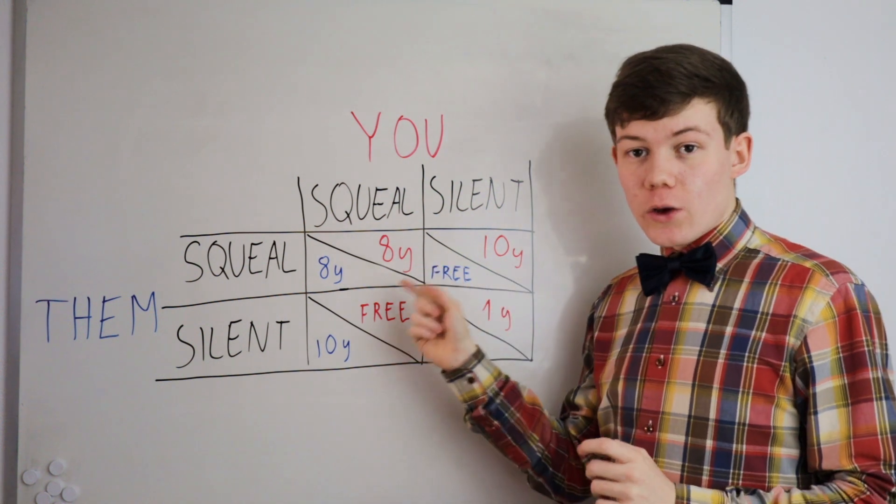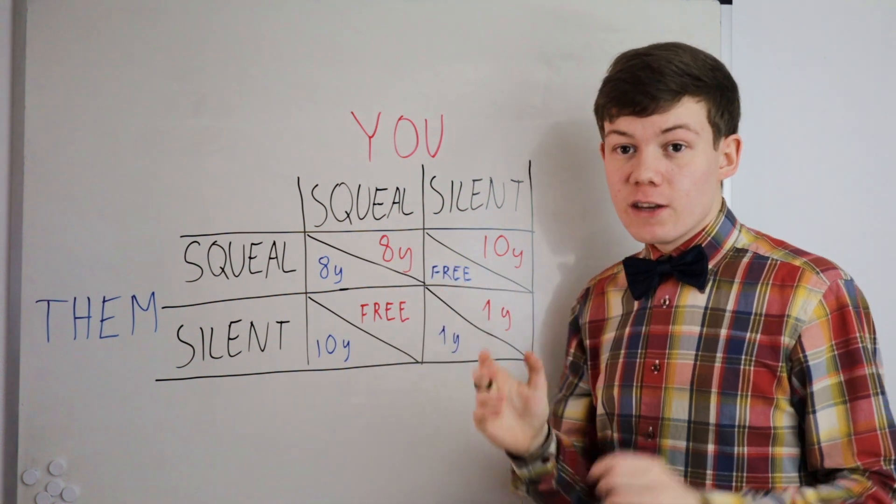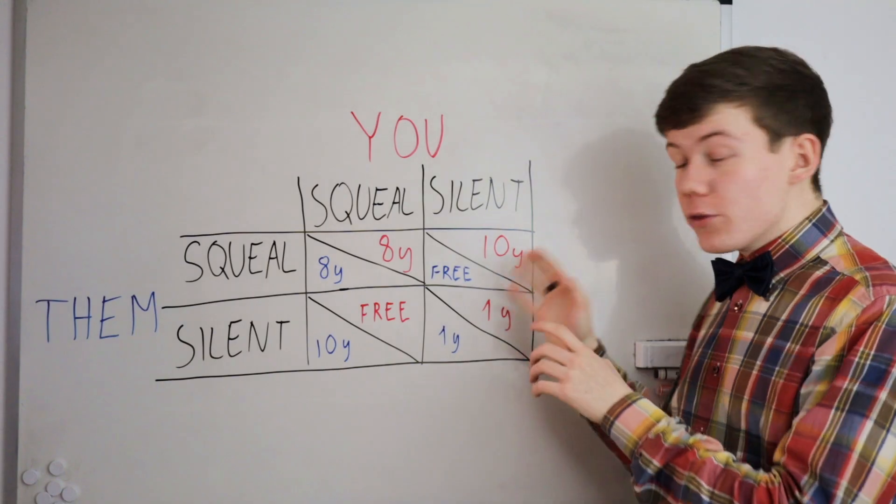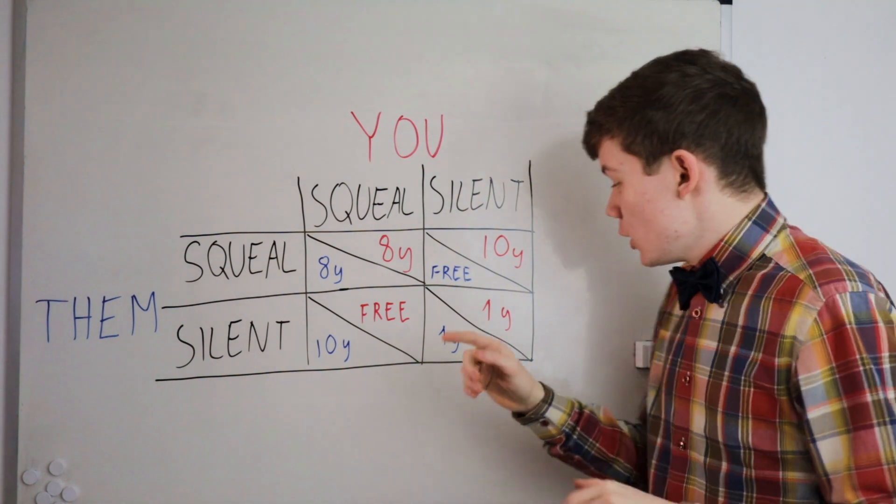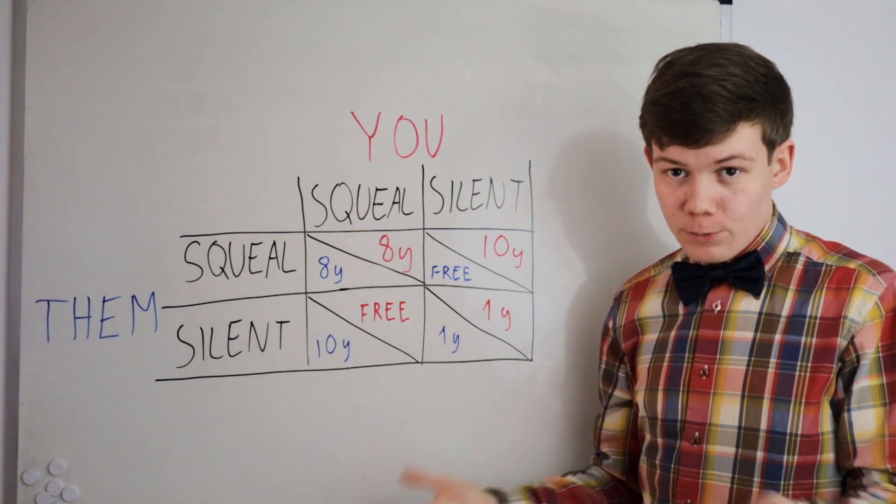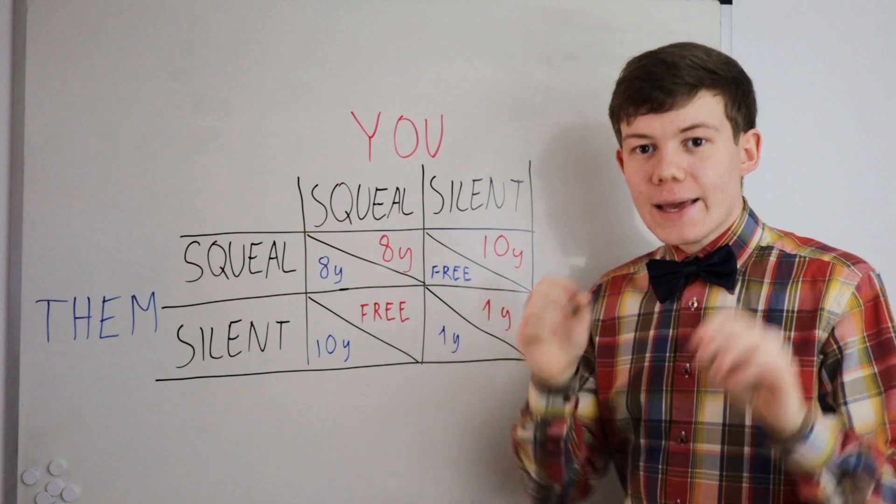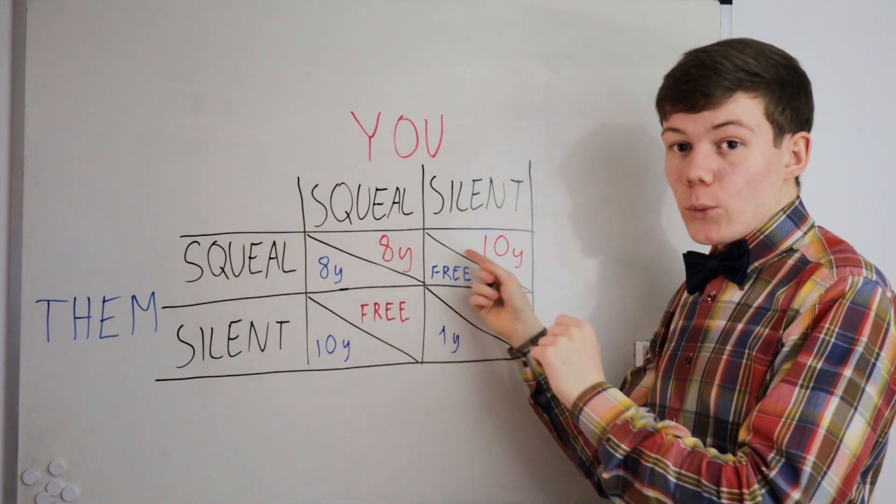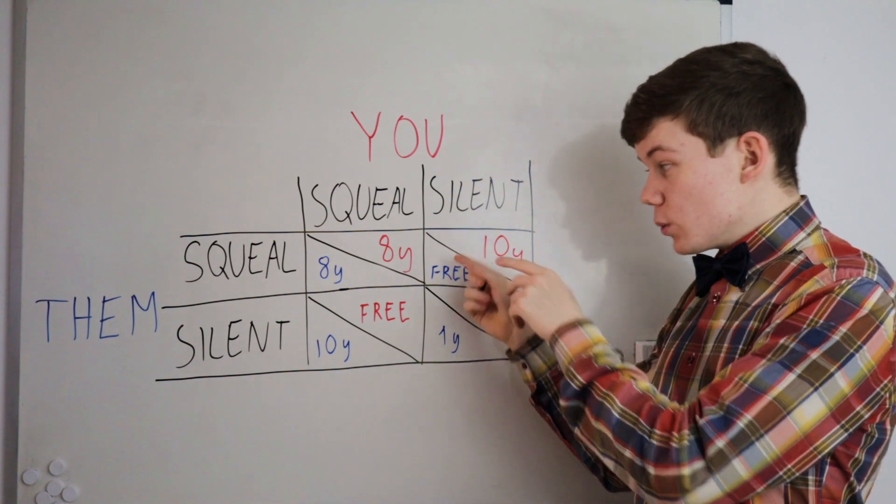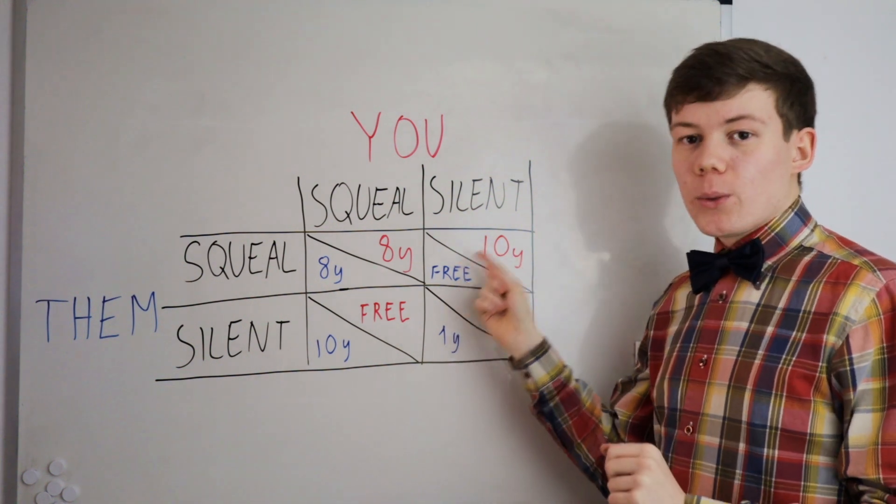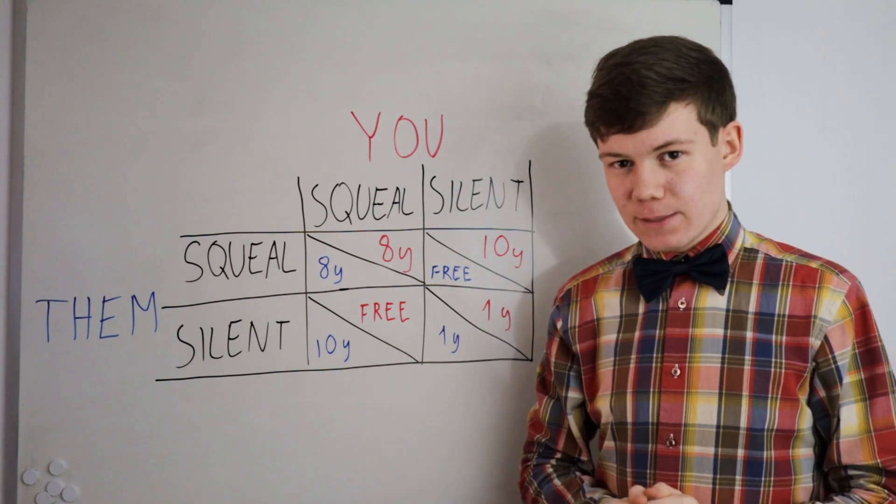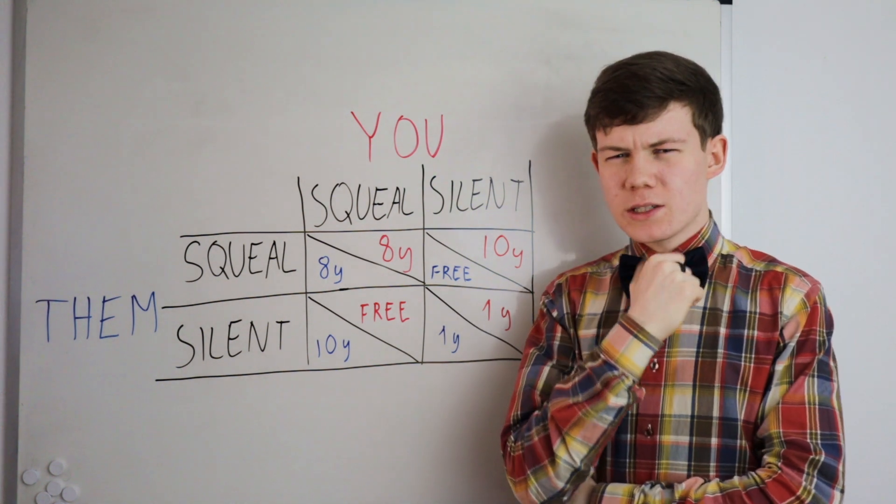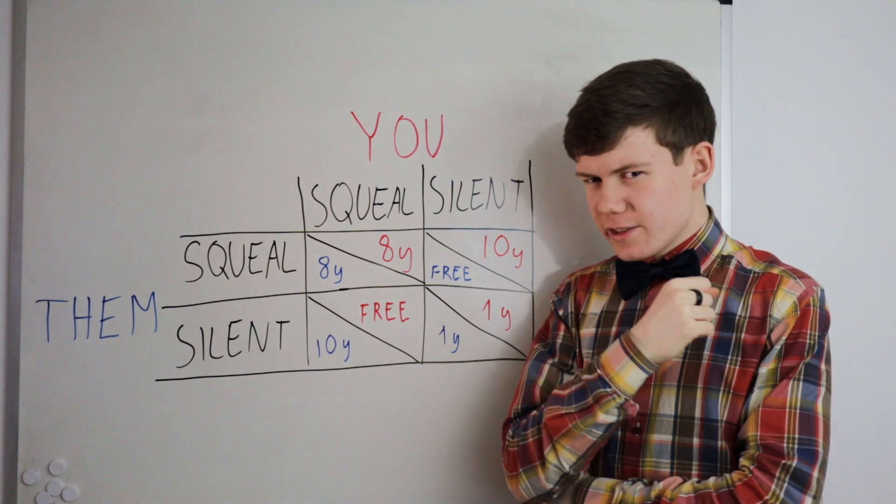The police tell you there are four different outcomes to this situation. If you both squeal on the other one, you're both going to prison for eight years. Not ideal. If both of you stay silent, neither of you squeal on the other person, you only get one year in prison because of the smaller crime. However, if one of you squeals on the other, but the other one stays silent, the one who squeals gets to go free, while the other one has to serve ten years in prison. So then the question arises, what's the best thing to do here?